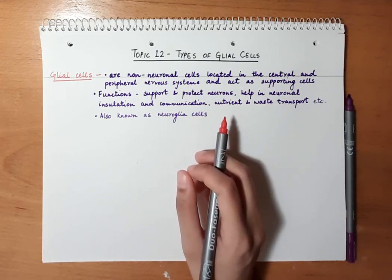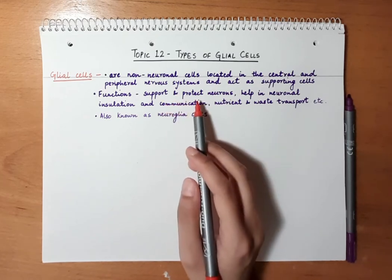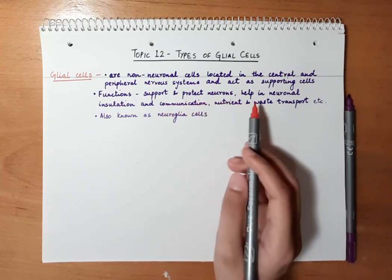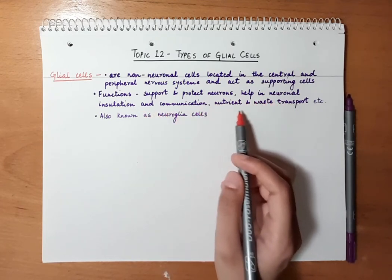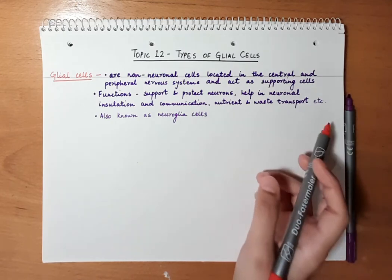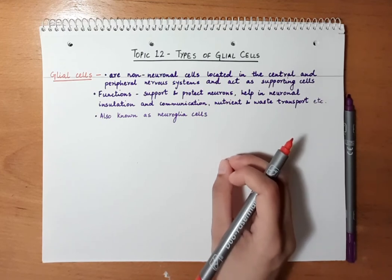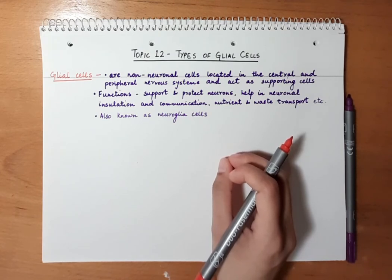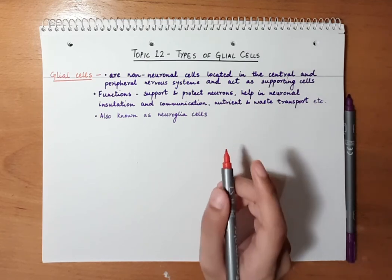The main functions of the glial cells are: firstly, to support and protect the neurons; they also help in neuronal insulation and communication; and also nutrient and waste transport. Importantly, they protect the neurons against damage and against any kind of pathogens or infection. They also help in neuronal communication and insulation.